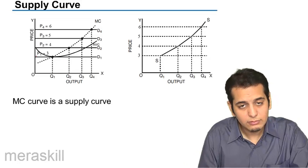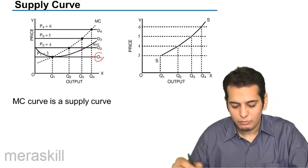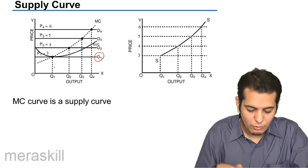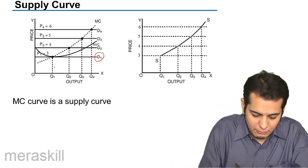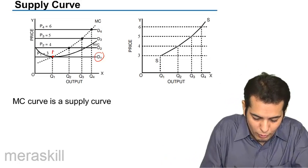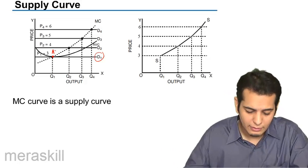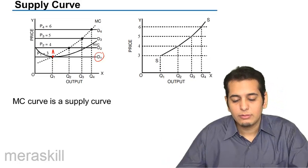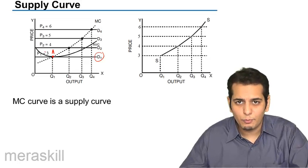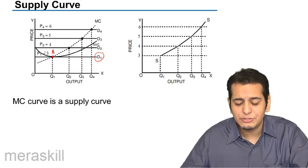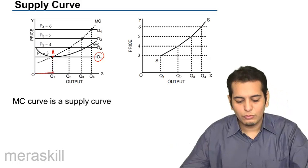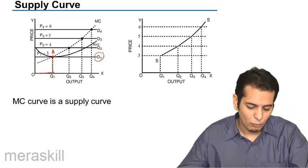If the demand is D1, the firm should be producing OQ1 quantity because D1 intersects the AVC curve at point A. This is the least average variable cost — the minimum — and this is where it is tangent with the demand curve. So OQ1 is the amount of goods it should sell.